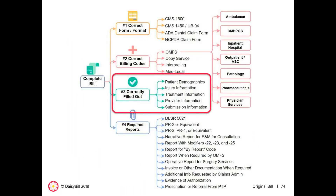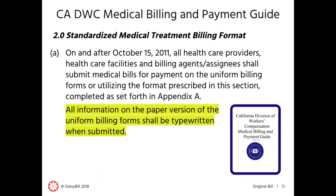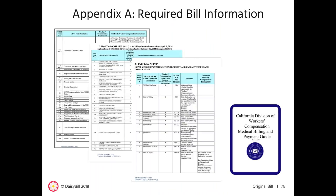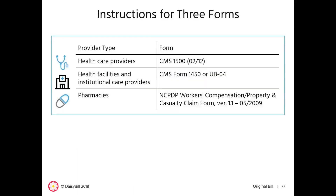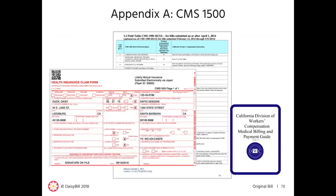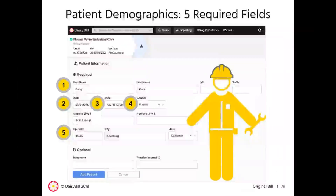Now we'll go through the different types of information that must populate the various forms. The DWC guide specifies that all information on paper submission of original bills must be typewritten. For each bill type, Appendix A of the DWC guide lists the information which is required, optional, and situational when filling out the bill form. We'll go through the DWC instructions for three forms: the CMS-1500, the UB04, and the NCPDP form. Let's start with properly completing the CMS-1500 form.